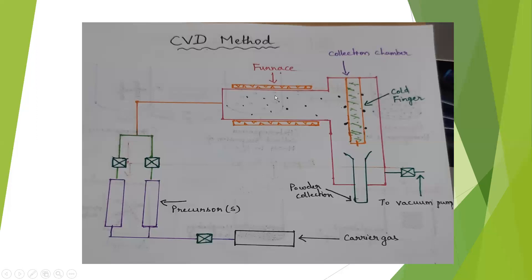This is the furnace, and the shaded part shows the hot zone of the furnace. This furnace is maintained at very high temperature. The precursor vapor stream coming out will enter the furnace, where it undergoes a chemical reaction — the vapors react with each other. The precursors and the carrier gas at high temperature react with each other, and finally the nanoparticles are formed as clusters.